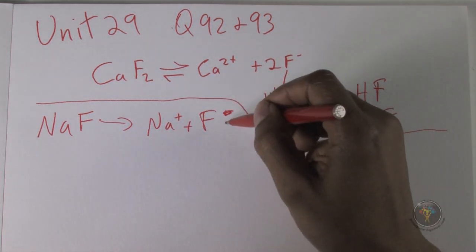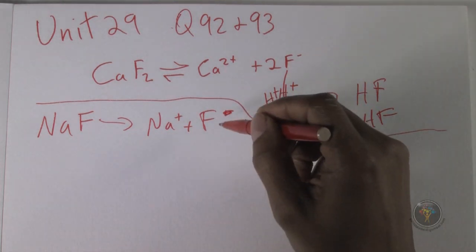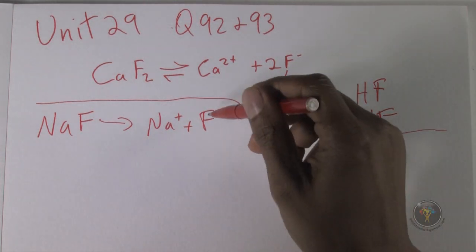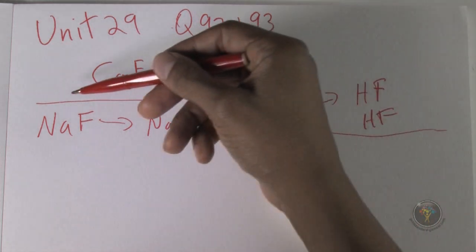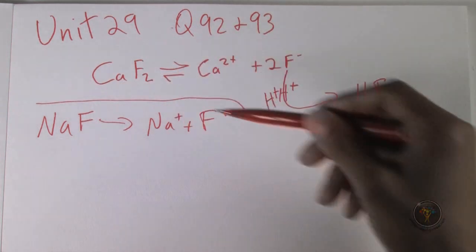These F- ions are going to form precipitates because they will stress out this side of the reaction and push the reaction back to the solid, which means precipitation.